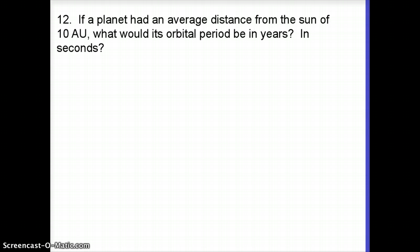I'm going to start with number 12 which deals with a planet going around the Sun. Now this is a fictitious planet, we're just going to pretend, and it has an average distance from the Sun of 10 AU. So that is our value of A. A is 10 AU in this case. Average distance from the Sun is the same as the major axis.